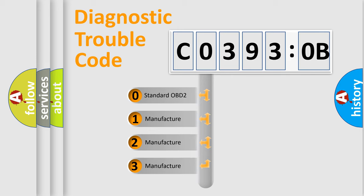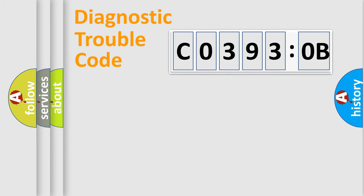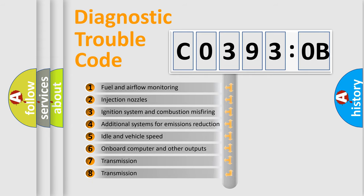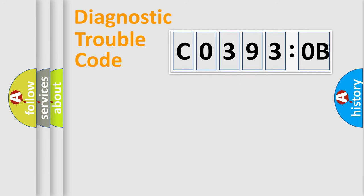If the second character is expressed as zero, it is a standardized error. In the case of numbers 1, 2, or 3, it is a manufacturer-specific error. The third character specifies a subset of errors. The distribution shown is valid only for standardized DTC codes. Only the last two characters define the specific fault of the group.